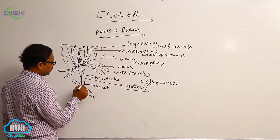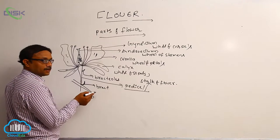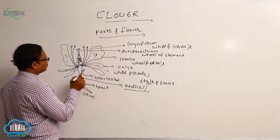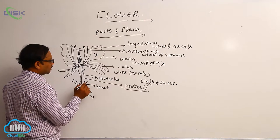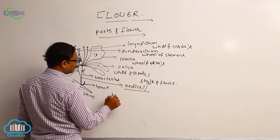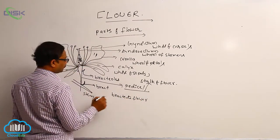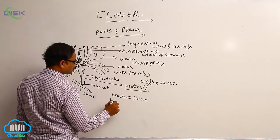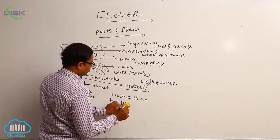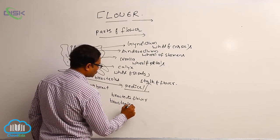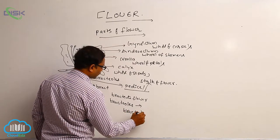Below that pedicle, a small leaf-like structure is present — that is known as the bract. Always flowers are formed from the axil of the bract. Again, small leaf-like structures present on the pedicle are known as bractioles. If a flower has a bract, it is known as a bracteate flower. If a flower has bractioles, they are also known as bracteolate flowers.